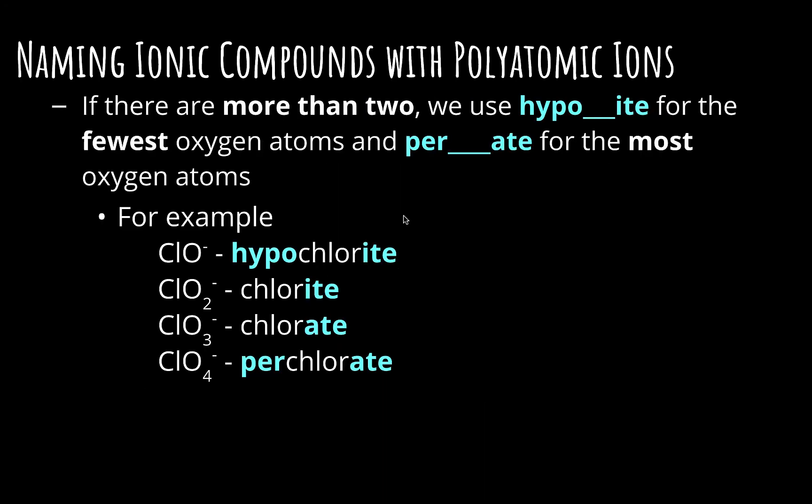If there's more than two in the series, then we add hypo- and per- to the -ite and -ate. For the fewest number of oxygen atoms we use hypo- -ite, and for the greatest number of oxygen atoms we use per- -ate. So in the series CLO-, CLO2-, CLO3-, and CLO4-, the one with the fewest oxygens is called hypochlorite, then chlorite, then chlorate, and the one with the most oxygen atoms is called perchlorate.